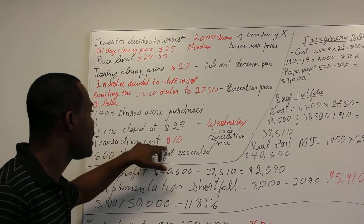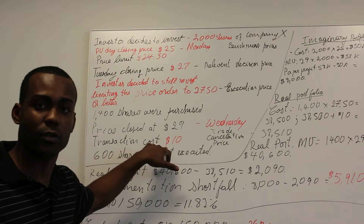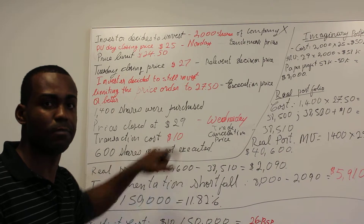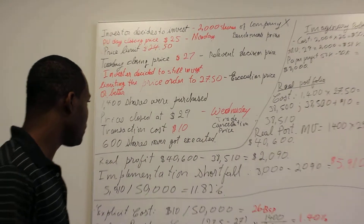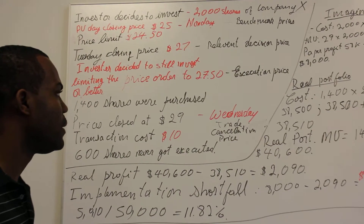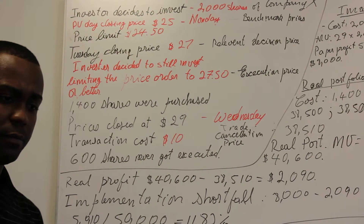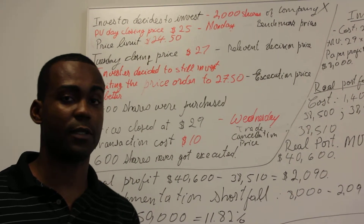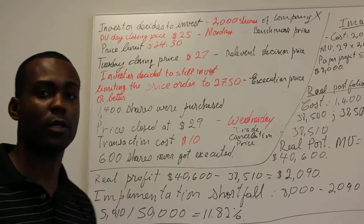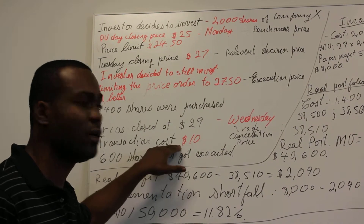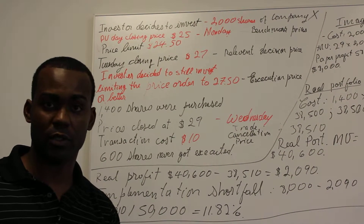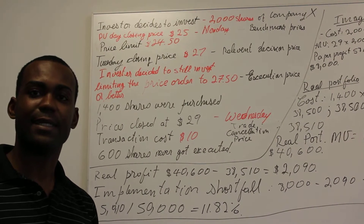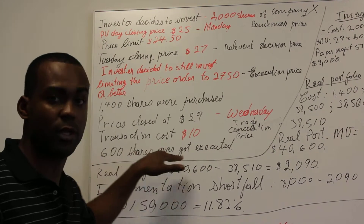The investor paid a trading cost of $10 to purchase the 1,400 shares — that's his explicit brokerage commission. For the unsophisticated investor, the cost of this trade might seem to be just the $10. But the $10 is only the explicit cost — it's just the cost you see. There are a lot of implicit, or unseen, costs also associated with this trade.